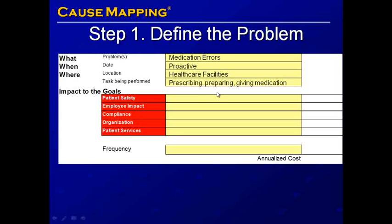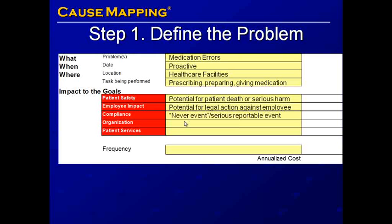Once we have defined the problem, we move on to the impact to the goals. There is a potential impact to the patient safety goal — the potential for patient death or serious harm when a medication error occurs. A medication error is a never event or a serious reportable event, also called an adverse reportable event depending on your state and reporting requirements.